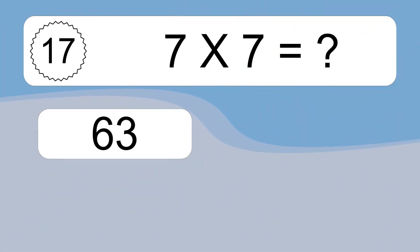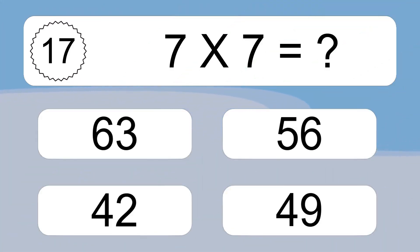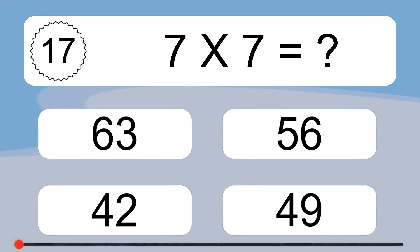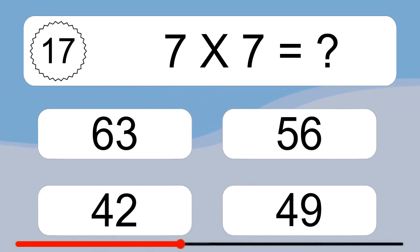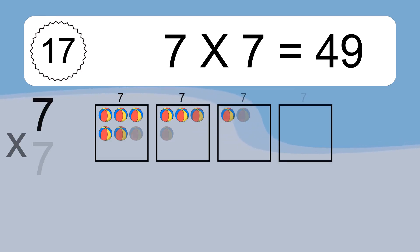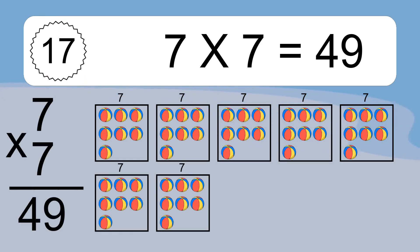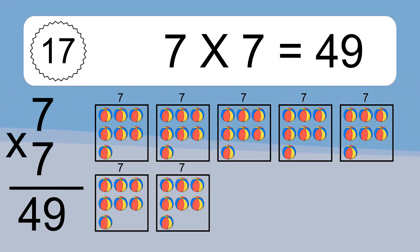Seven times seven equals what? Seven times seven equals forty-nine. We have seven boxes, and each box has seven colorful balls inside. If you count all the balls in all the boxes together, you will have seven times seven balls. This equals forty-nine balls.